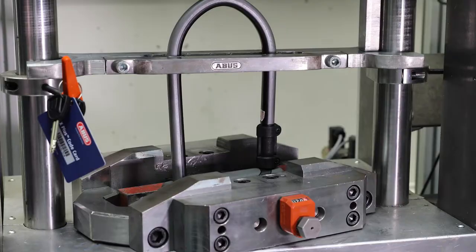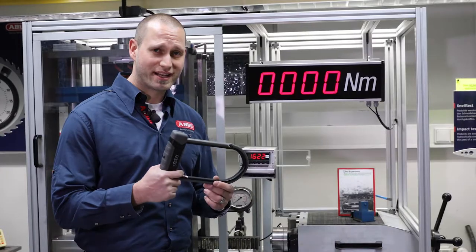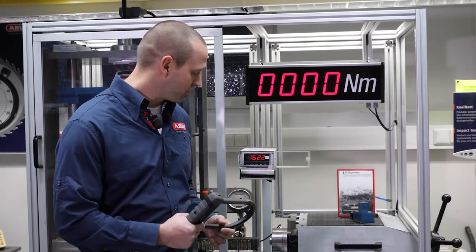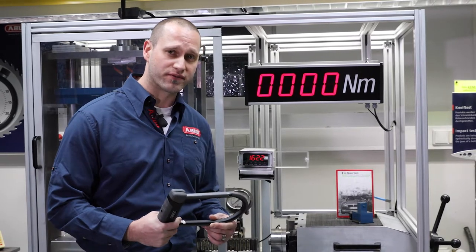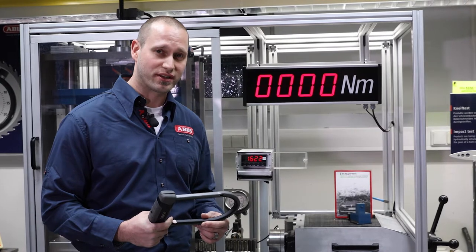Because of the special hardened steel we use, ABUS excels in these tests. The Granite X Plus 540 U-lock resisted more than 1600 Newton meters of force. That's more than three times the torque of a Ford Mustang GT350.